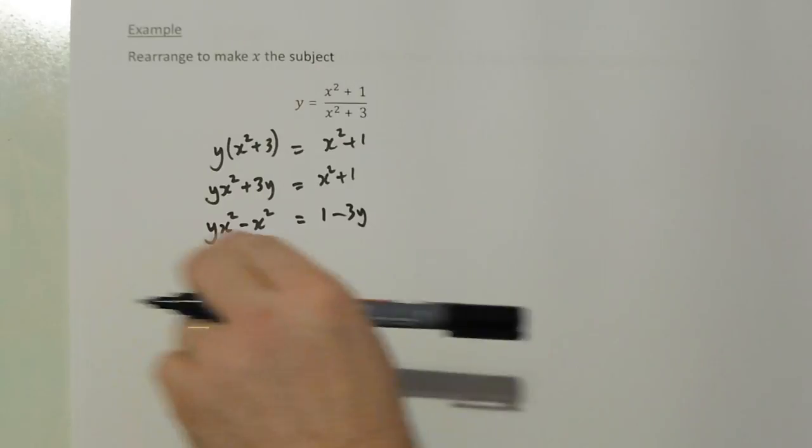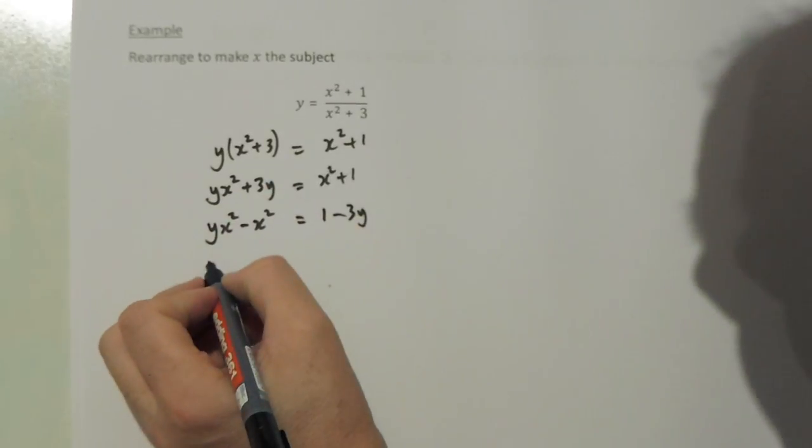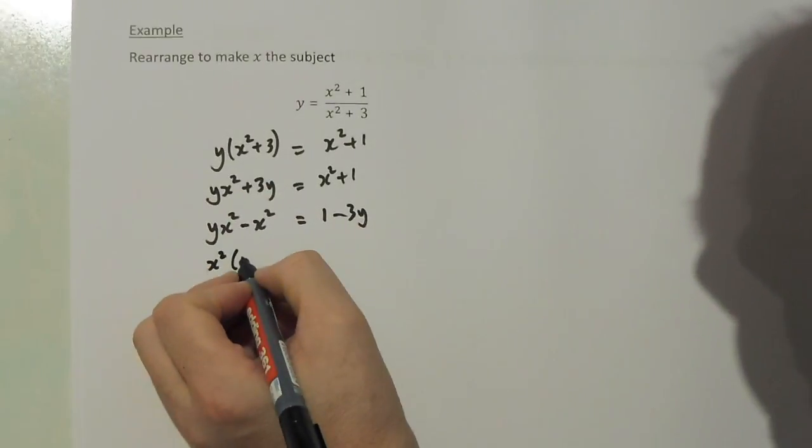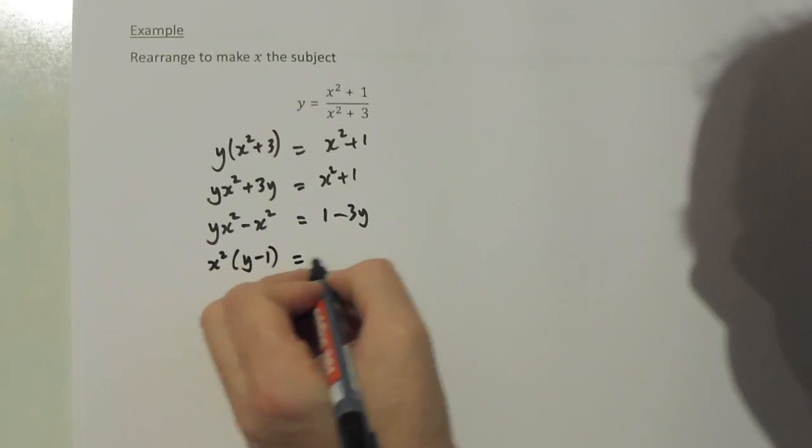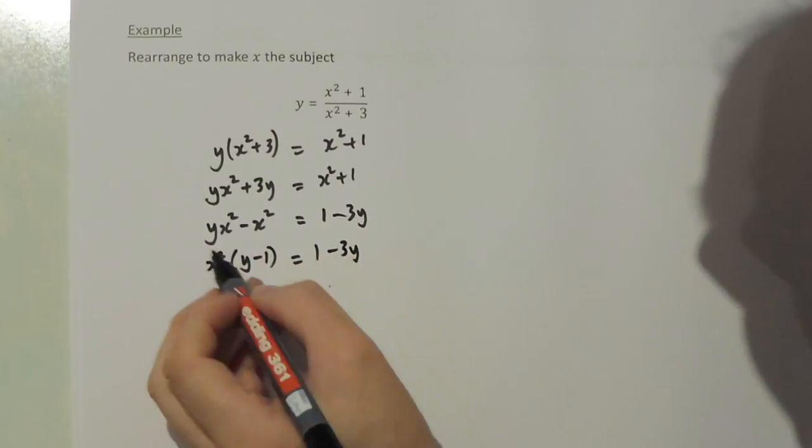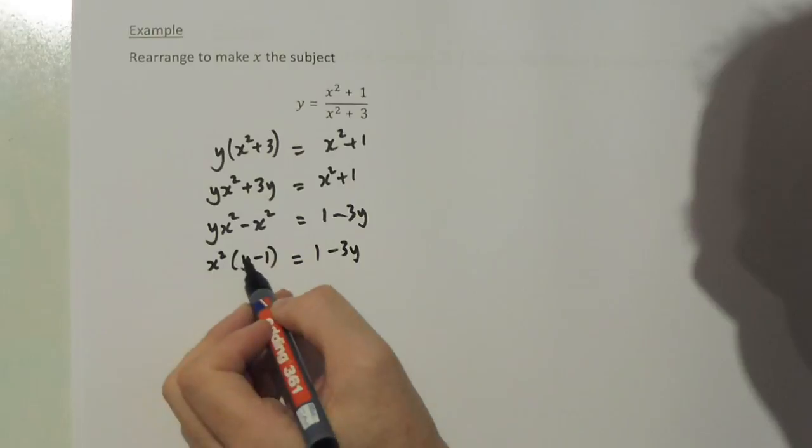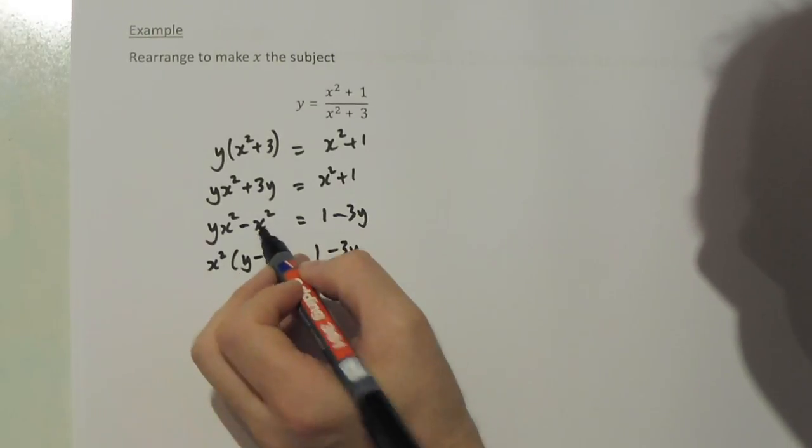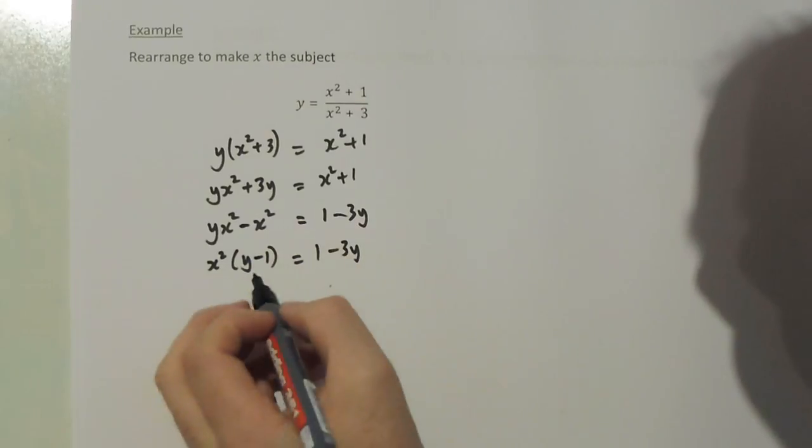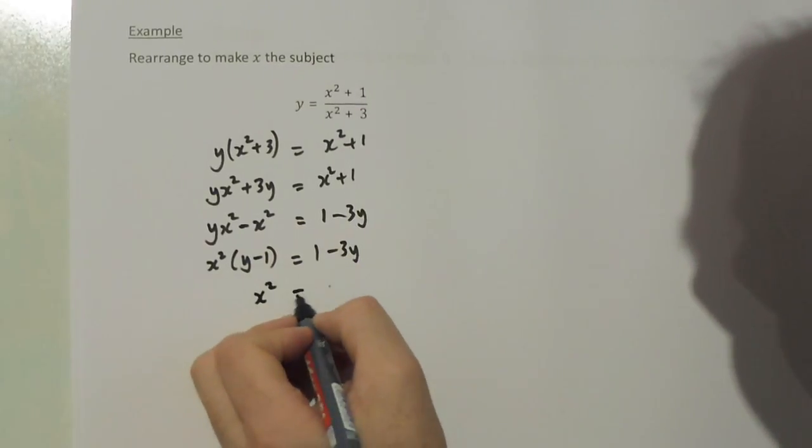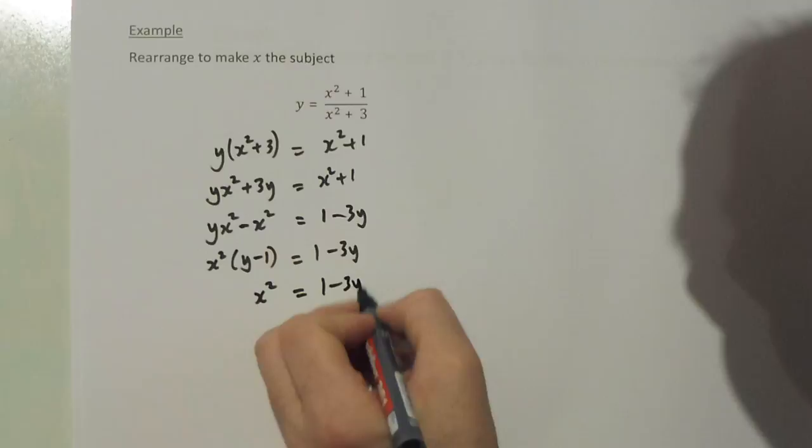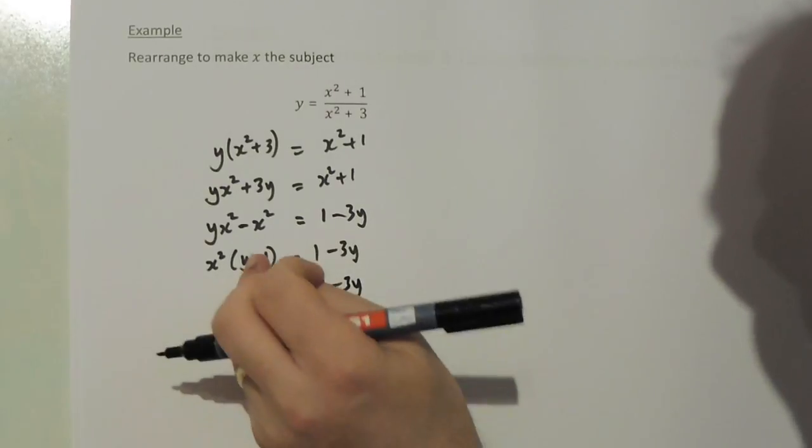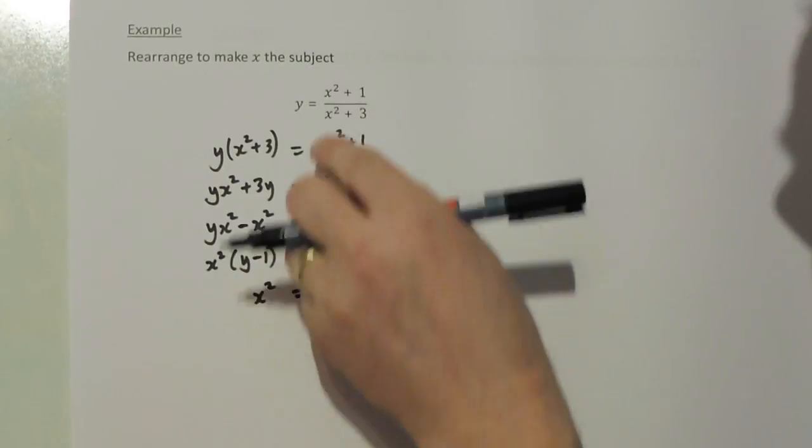I do that for this reason: I can factorize the left hand side. x squared times y minus x squared times 1 equals x squared. That means that x squared will equal 1 minus 3y. And if I now put this bracket back over here it becomes a divide.